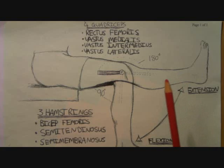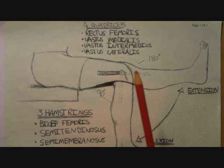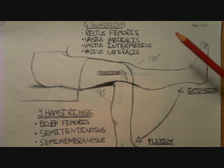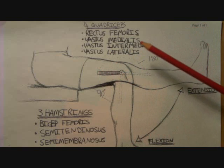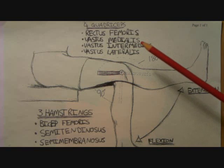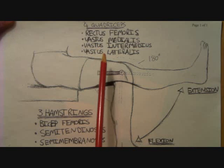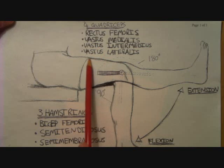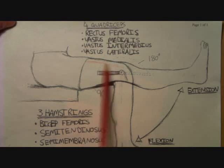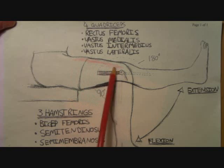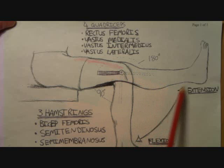The muscles that cause extension in the leg are the quadriceps. There are four quadriceps: the rectus femoris, the vastus medialis, the vastus intermedius, and the vastus lateralis. All these muscles are located up here and when they contract, they pull the leg straight.